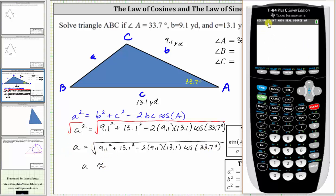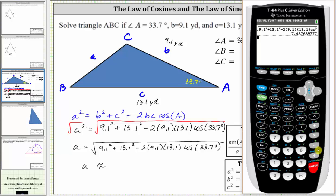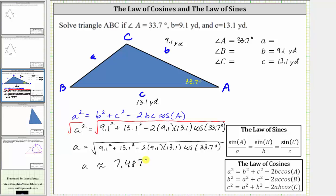It is important to make sure the calculator is in degree mode. We enter the square root, then 9.1 squared plus 13.1 squared minus two times 9.1 times 13.1 times cosine of 33.7 degrees, and press enter. Rounding to four decimal places — there is an eight in the fifth decimal place, so we round up — A is approximately 7.4877. When giving the final value of A, we round to one decimal place just like B and C, so A is approximately 7.5 yards. However, for future calculations we will use A rounded to four decimal places, so let's record A as approximately 7.4877 yards on the triangle.